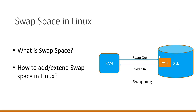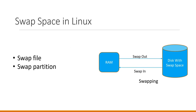Swap is a part of the disk which is used when the amount of physical memory or RAM is full. Generally we can add or extend swap in two ways: using a swap file or a swap partition. In this video we will see both ways — how to add or extend swap in Linux using a swap file and a swap partition.